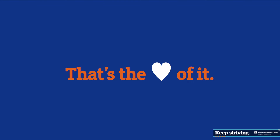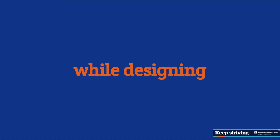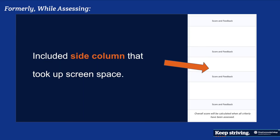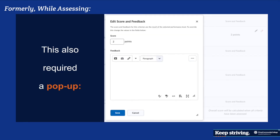Now let's get into the details. A main change is that the rubric type used to be fixed once set up initially — now with the new version it's flexible, and you can shift from analytic to holistic and back again while grading. The old version had a side column that was hard to fit on screen, especially on smaller laptops with many columns. That column no longer takes up screen space.